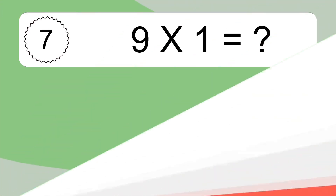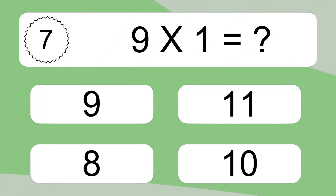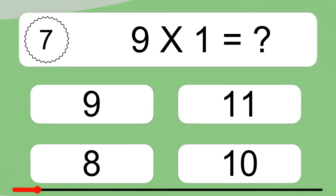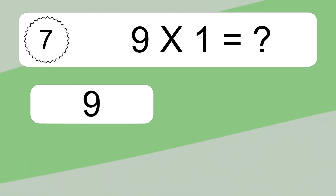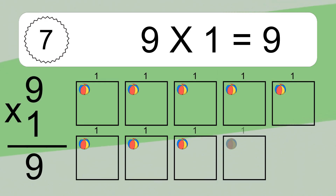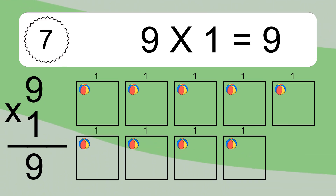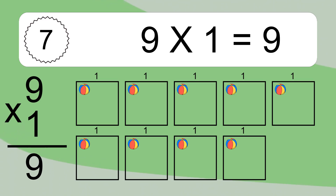9 times 1 equals what? 9 times 1 equals 9. We have 9 boxes, and each box has 1 colorful ball inside. If you count all the balls in all the boxes together, you will have 9 times 1 balls. This equals 9 balls.